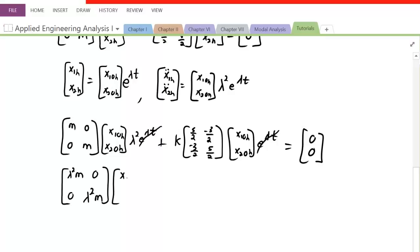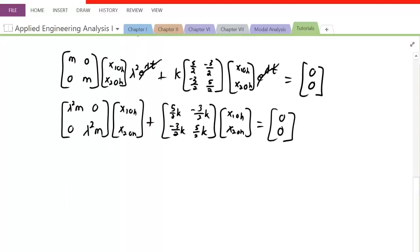So we have X1 not H, X2 not H. If I multiply the K inside, we have 5 over 2 K, minus 3 over 2 K, minus 3 over 2 K, and 5 over 2 K. Again, multiply by X1 not H, X2 not H, equal to the forcing function 0, 0. And next we want to add these two matrices together.